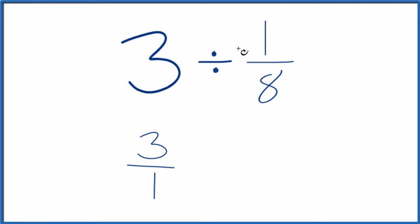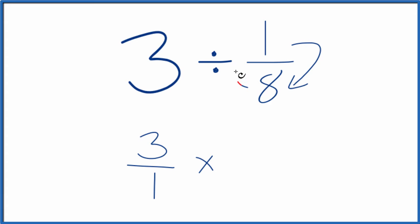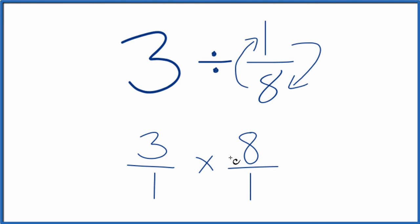Next, instead of division, we're going to multiply by the reciprocal of 1/8. To take the reciprocal of a fraction, we move the numerator to the bottom and the denominator to the top. So for 1/8, we get 8 over 1 — that's the reciprocal of 1/8.